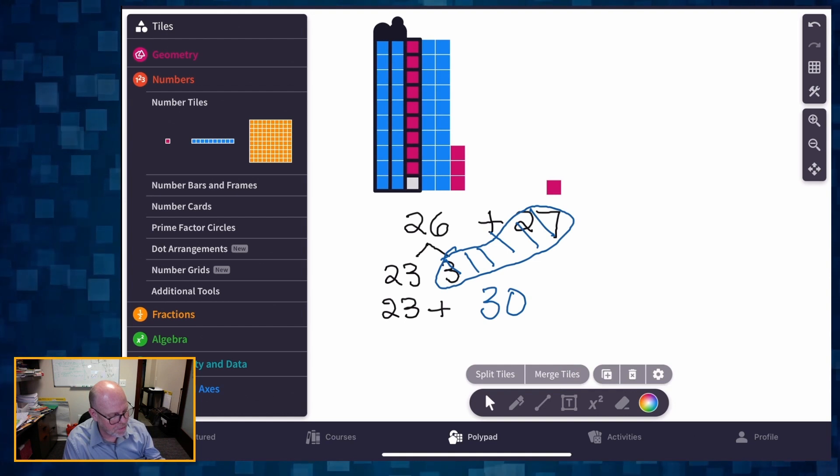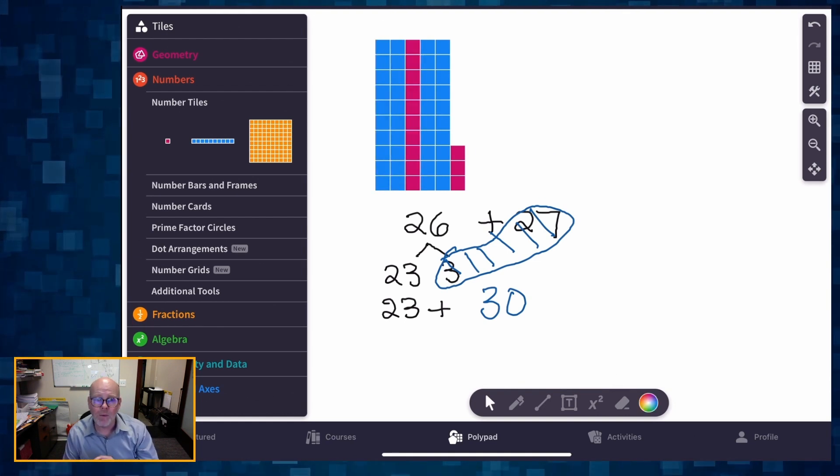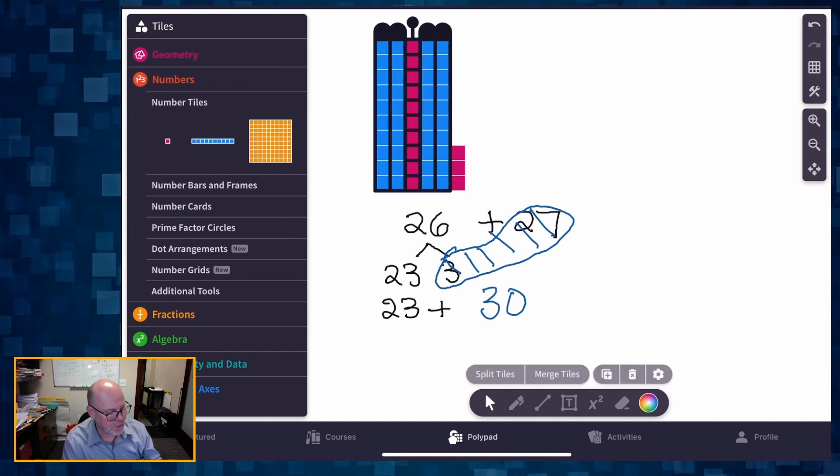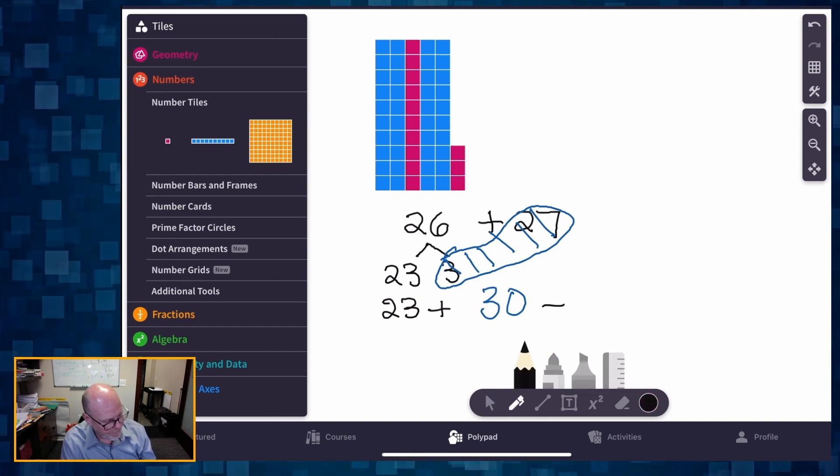Oops, I lost my little unit there. And now what do I have? I have five tens plus three extras. So that means I've got 53.